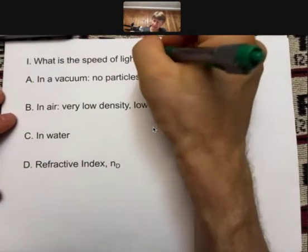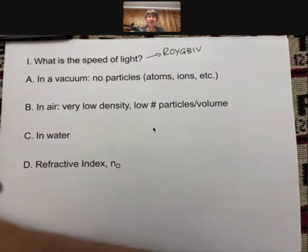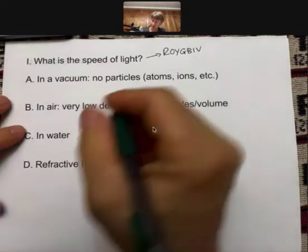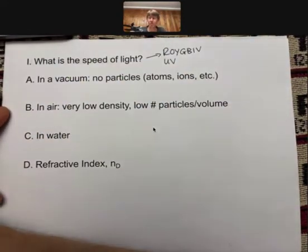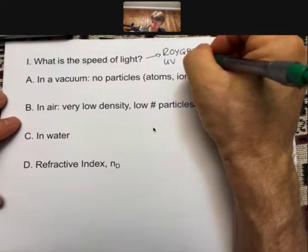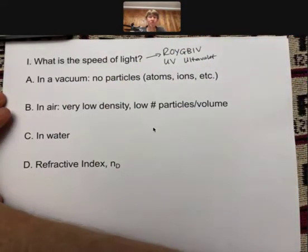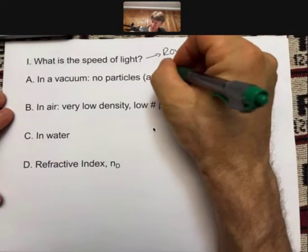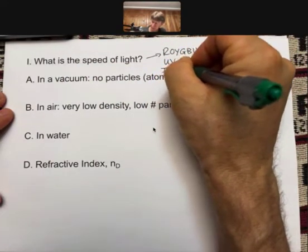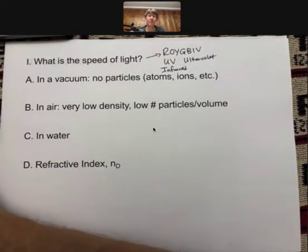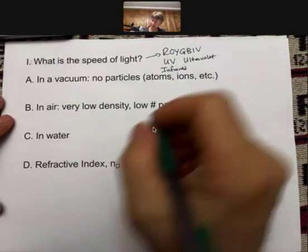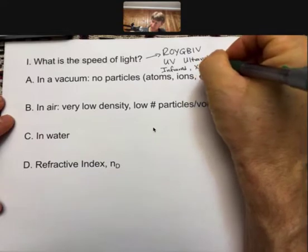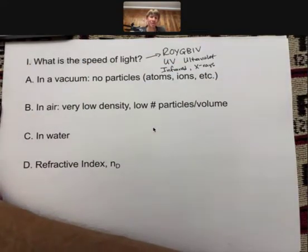But it also turns out that other kinds of light, or what we might call electromagnetic radiation, also travel at the same speed. You might have heard of UV ultraviolet, also travels at the same speed. You may have heard of infrared, which if you've ever used night vision goggles or heat sensitive goggles, those are looking at the infrared wavelengths. X-rays, gamma rays, radio waves, cell phone signals—they all travel at the speed of light.